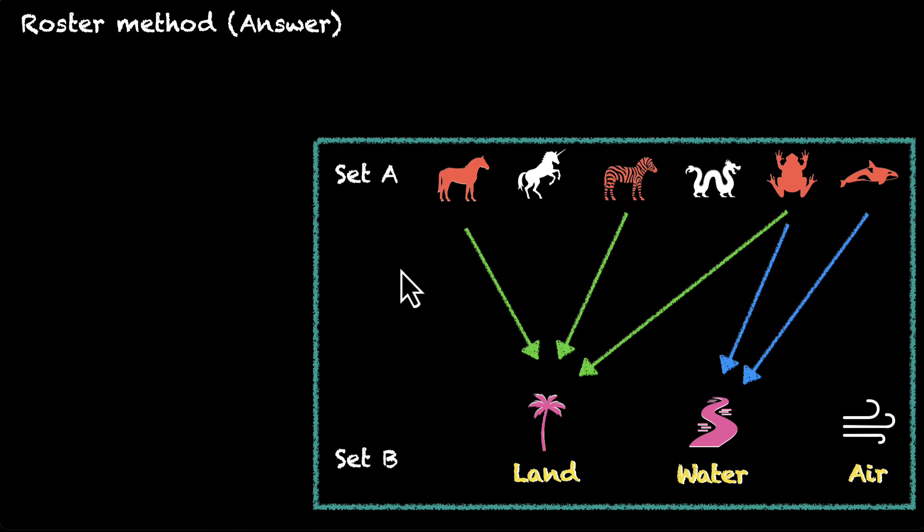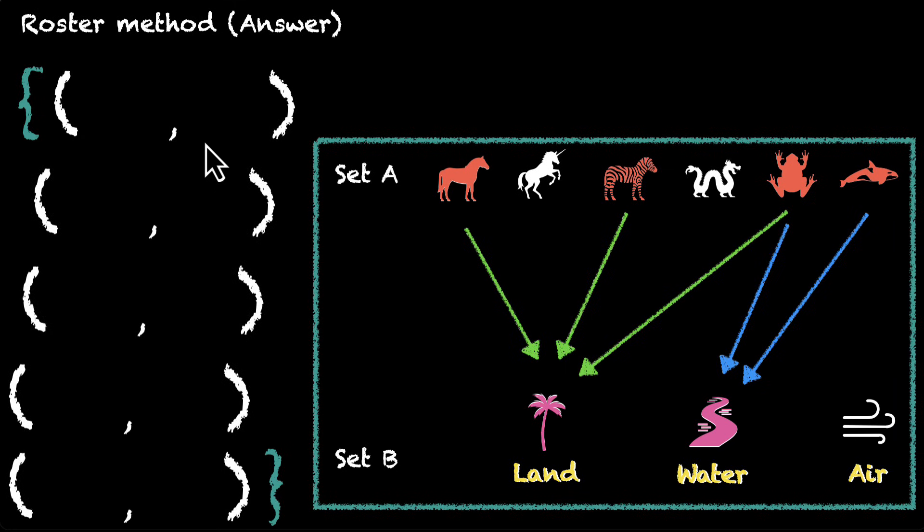So let's write this relation down in the roster form. We'll need some brackets, curly brackets, and then we'll have these five elements. Why five? Because we have these five ordered pairs. One, two, three,